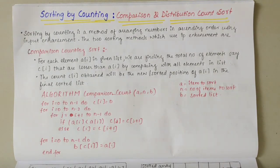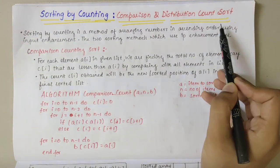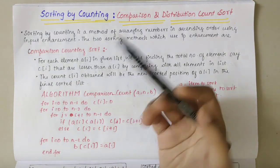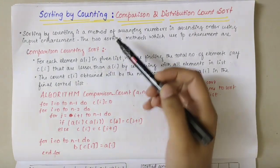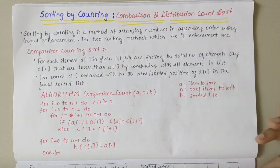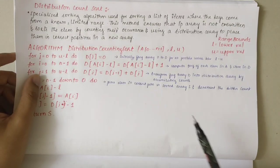In this video we'll be discussing the sorting by counting technique, which includes comparison count sort and distribution count sort. Sorting by counting is a method of arranging numbers in ascending order using input enhancement. The two sorting methods that use input enhancement are comparison counting sort and distribution counting sort.